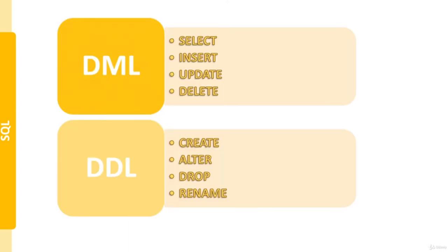SQL statements are grouped under two categories. DML, or Data Manipulation Language, lets you manipulate or make changes to rows: SELECT reads rows from a table, INSERT creates new rows, UPDATE edits existing rows, and DELETE eliminates rows. Most statements are applied to every row in a table, meaning that unless you specify a criteria, all rows will be affected by the statement used.